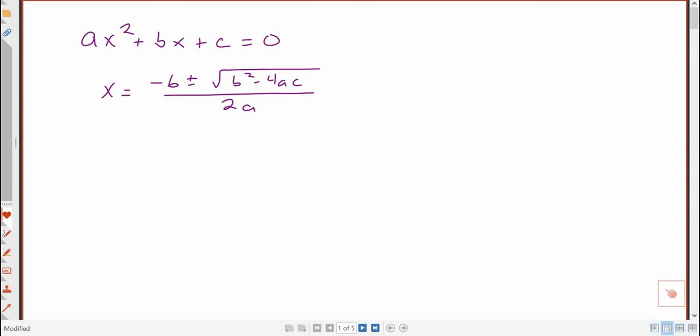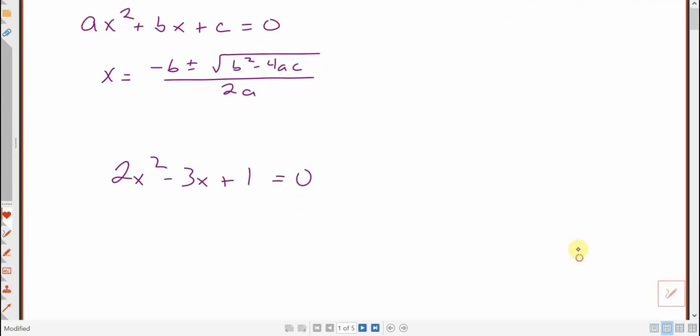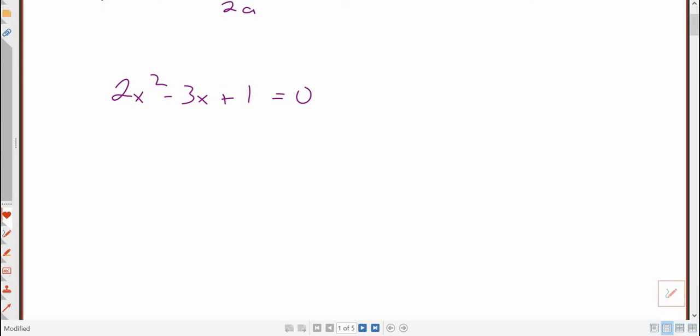Okay, so it's just a matter of identifying the a, b, and c, substituting into your formula, and then simplifying that. So let's suppose we have 2x squared minus 3x plus 1 equals 0, and I want to solve that.